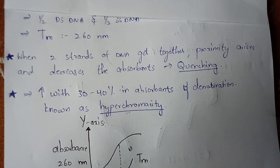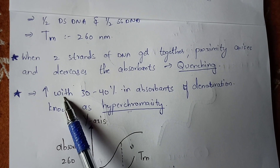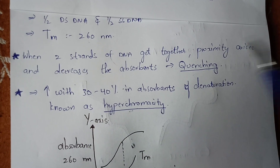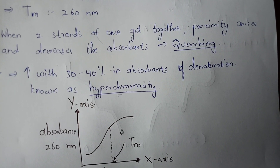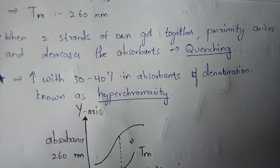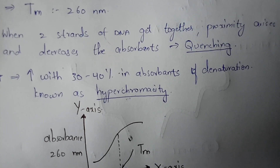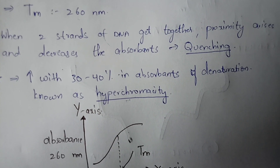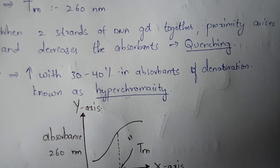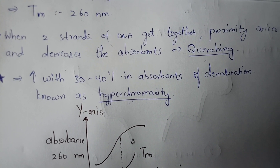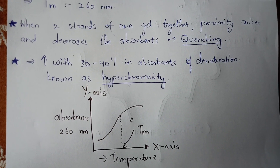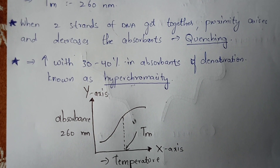Hyperchromicity is also an important question asked in degree examinations. A 30 to 40 percent rise in absorbance value observed during denaturation is known as hyperchromicity. When the absorbance increase is only 10 to 20 percent, it is called hypochromicity. Hyper means 30 to 40 percent increase, whereas hypo means 10 to 20 percent.